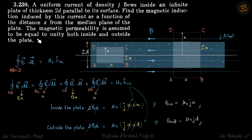The magnetic permeability is assumed to be unity inside and outside. So we'll separate both the cases when x is less than D and when x is greater than D. Basically we'll calculate the field inside the sheet and outside the sheet.